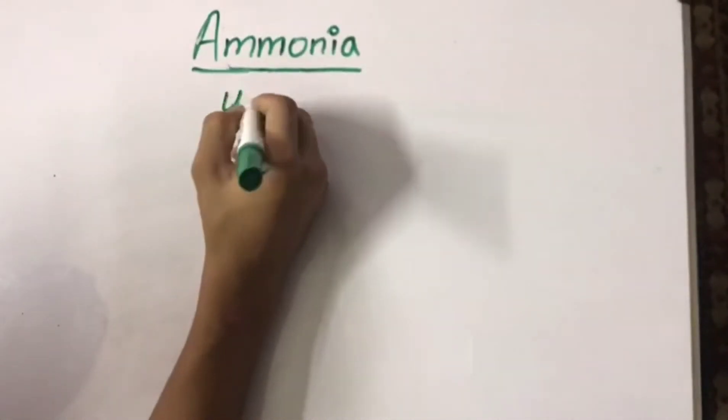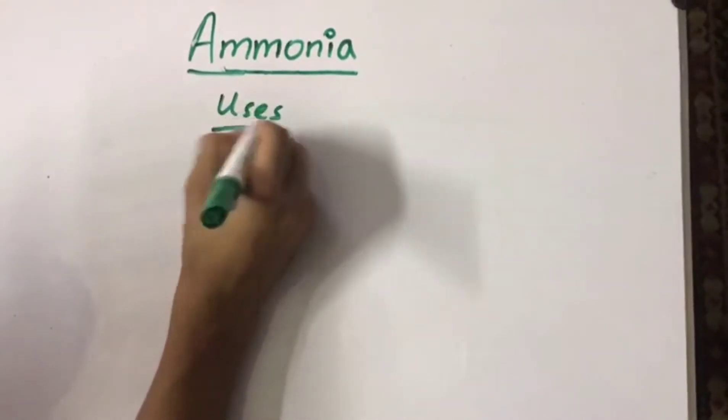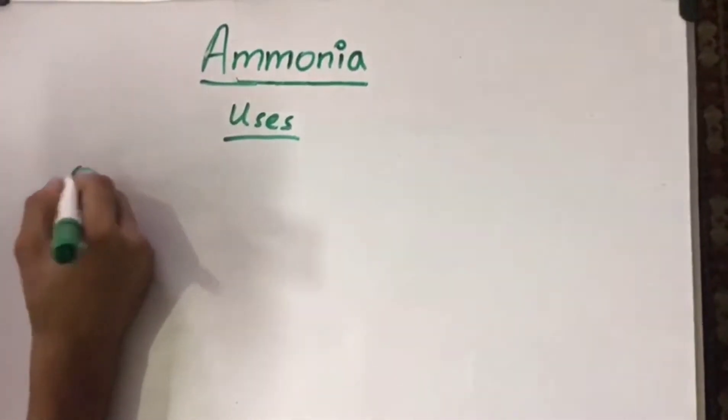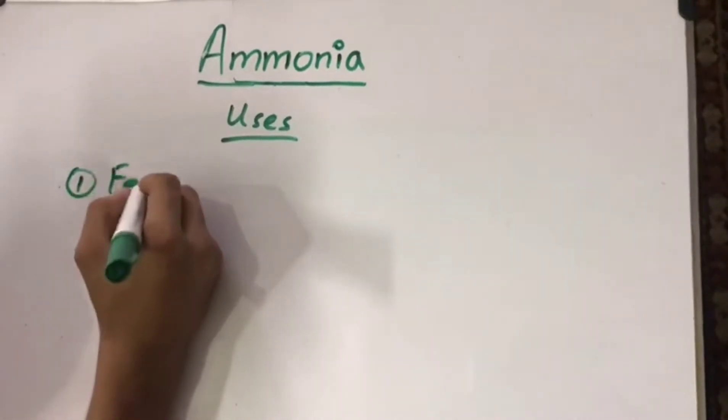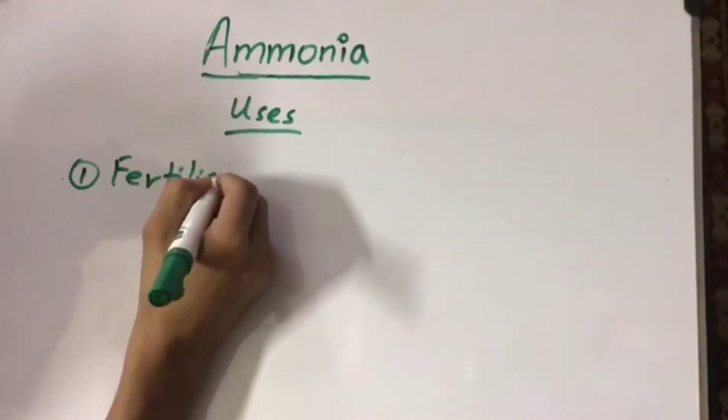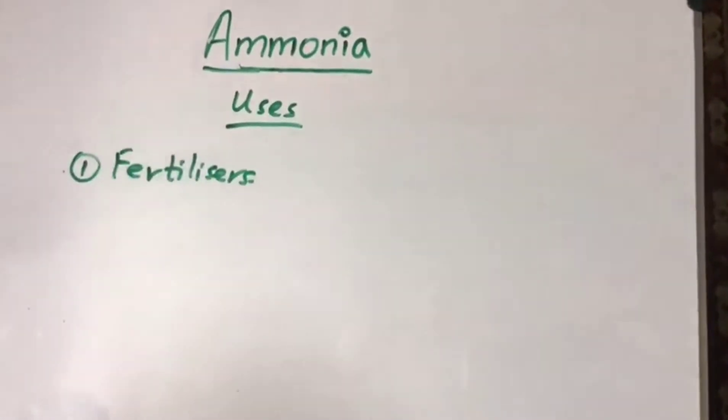Now the uses of ammonia. The most important use of ammonia is that it is used in the manufacture of fertilizers, that is, ammonium salts. For example, ammonium sulphate.